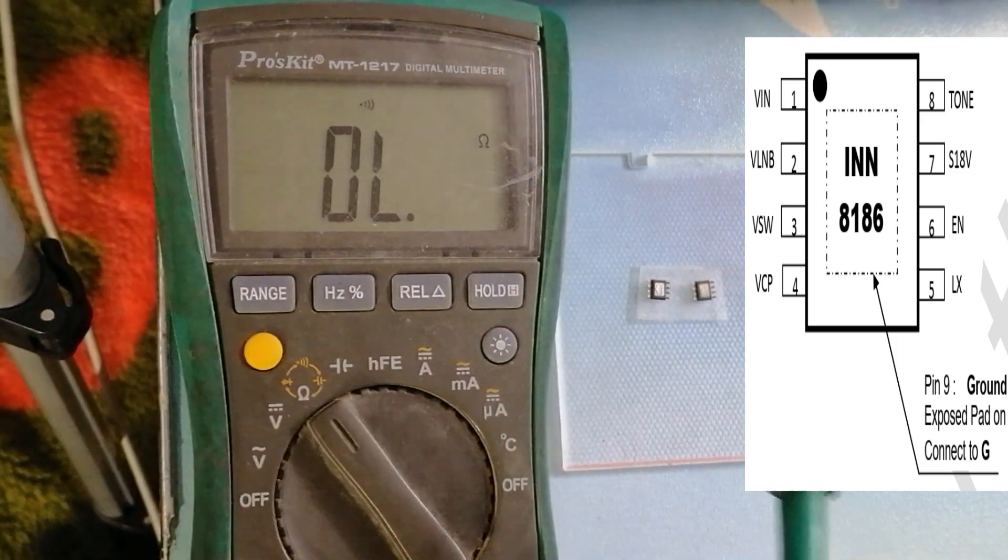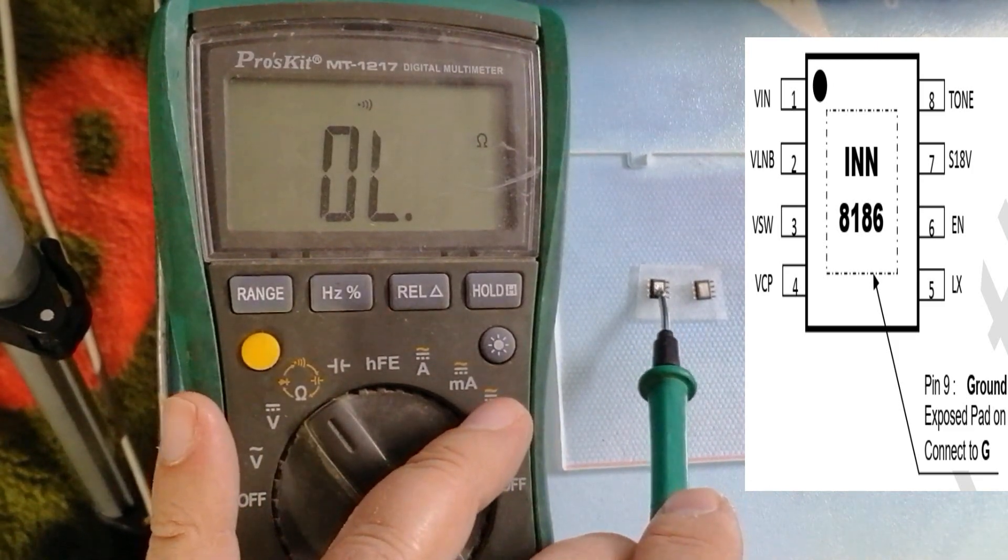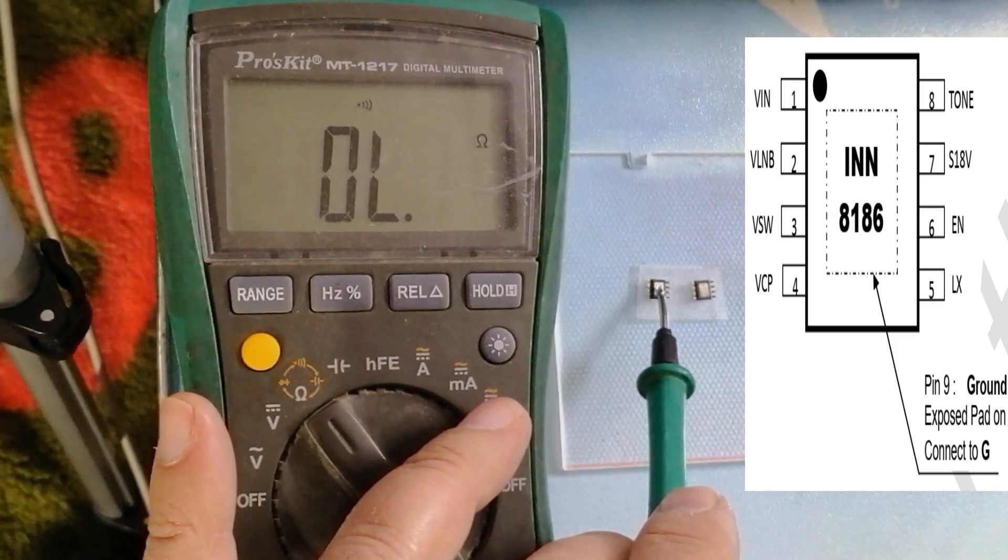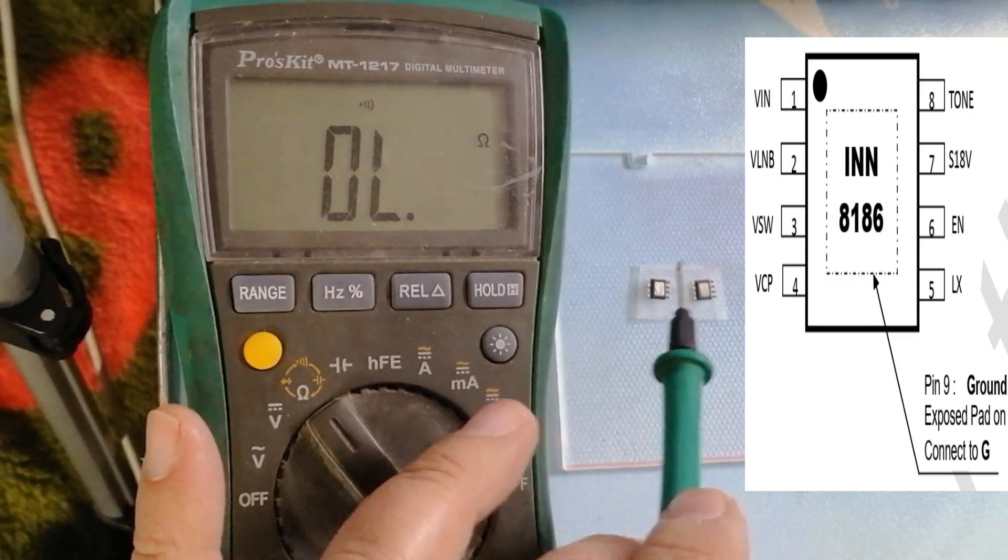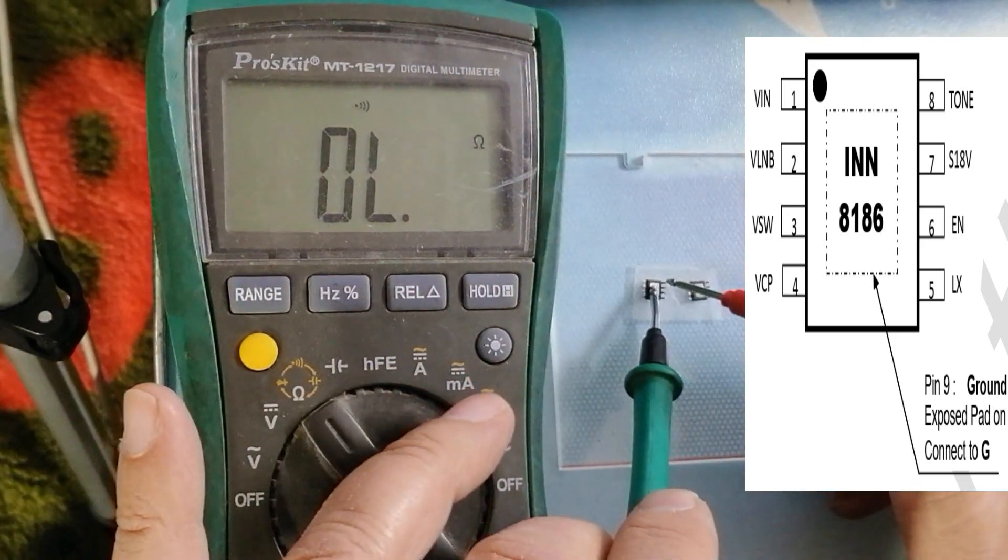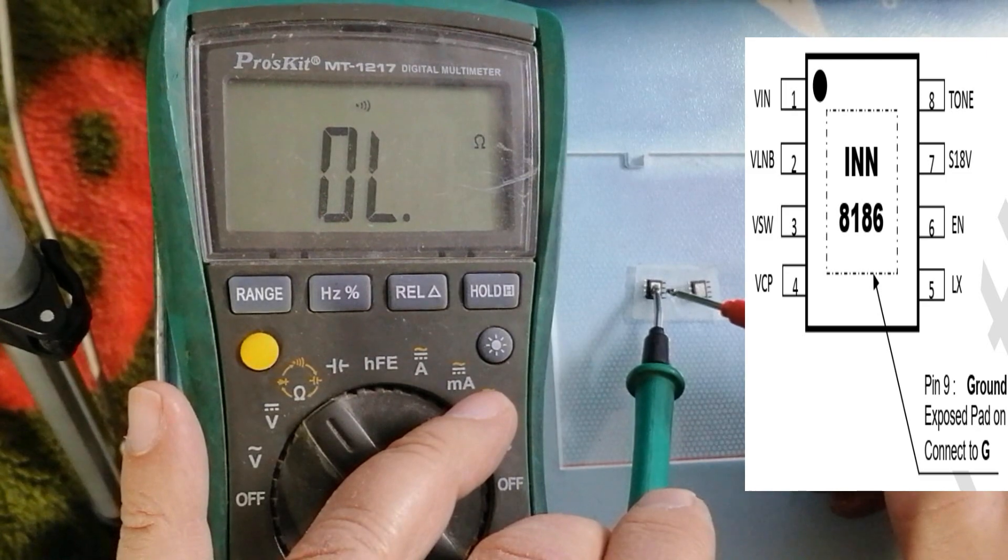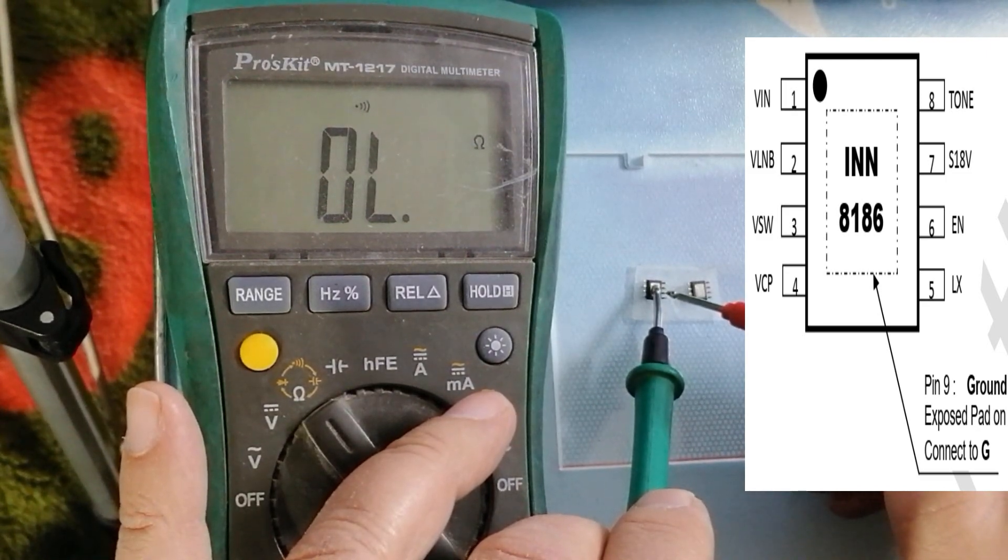First, we will compare these 8 pins with the ground. The ground is here, pin number 9. Now we will start. Pin number 1, as you see, there is no reading. Pin number 3, short.